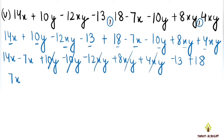Plus minus minus means minus. So 18 minus 13 is 5, the bigger number has plus sign. Our final answer is 7x plus 5.